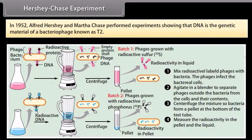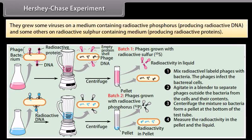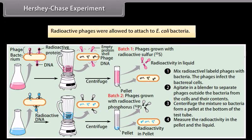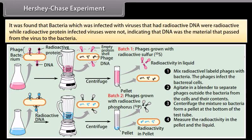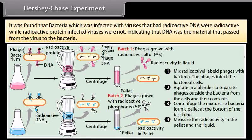In 1952, Alfred Hershey and Martha Chase performed experiments showing that DNA is the genetic material of a bacteriophage known as T2. They grew some viruses on a medium containing radioactive phosphorus, producing radioactive DNA, and others on a radioactive sulfur-containing medium, producing radioactive proteins. Radioactive phages were allowed to attach to E. coli bacteria. It was found that bacteria infected with viruses that had radioactive DNA were radioactive, while radioactive protein-infected viruses were not, indicating that DNA was the material that passed from the virus to the bacteria.